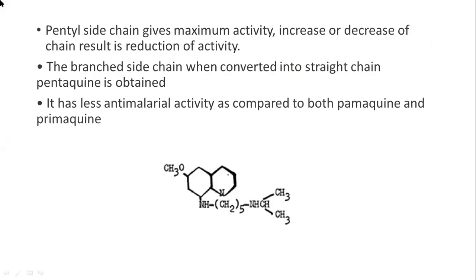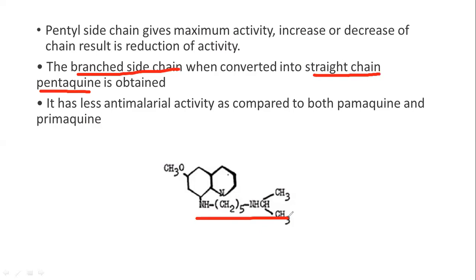If there is a pentyl side chain, the compound has maximum activity. But if we reduce the chain or increase the length, the activity will decrease. If we convert the branched chain into a straight chain, then we get Pentaquine. Pentaquine has less activity compared to both Pamaquine and Primaquine.